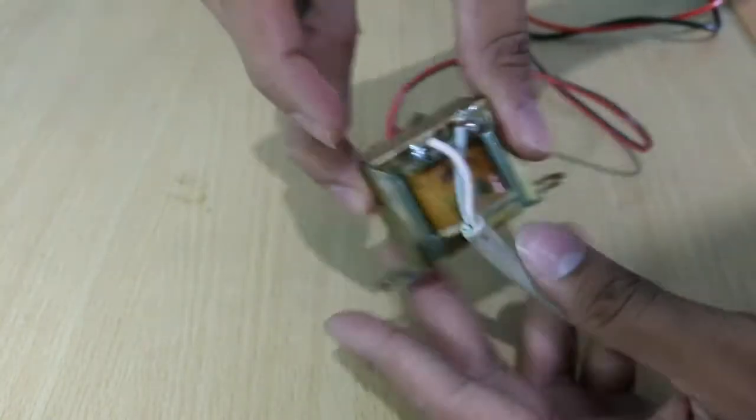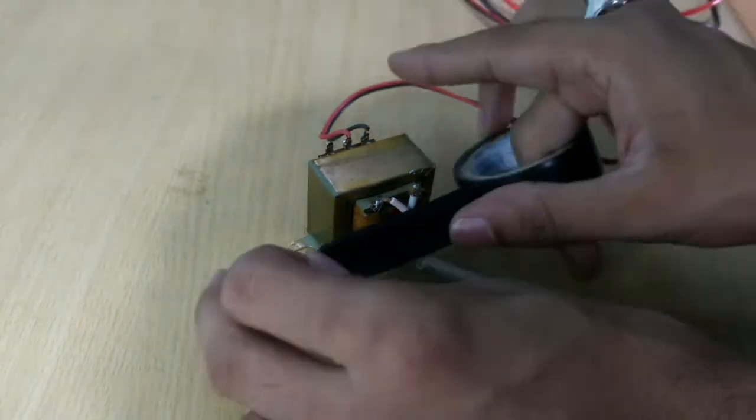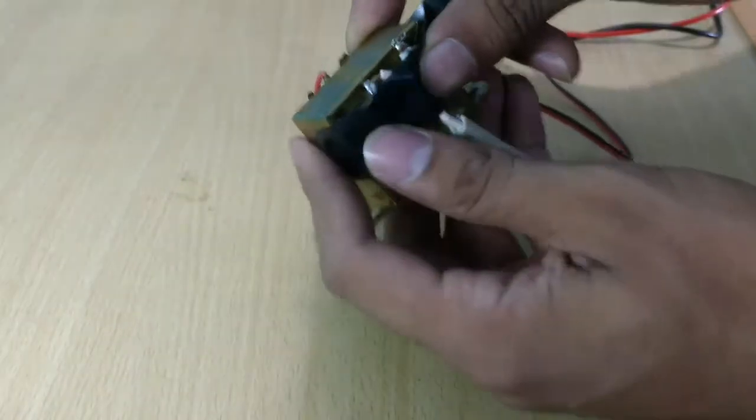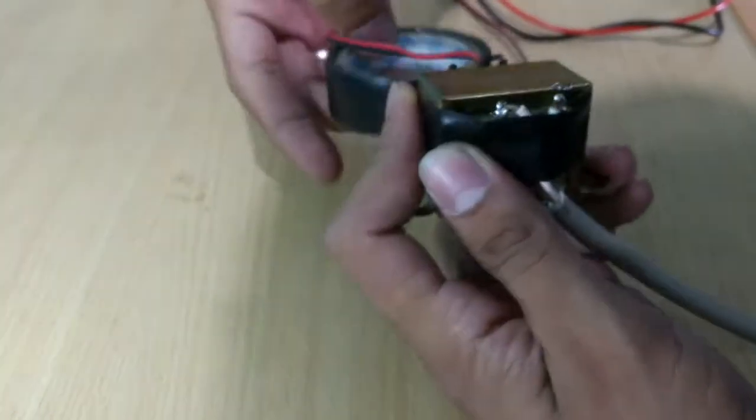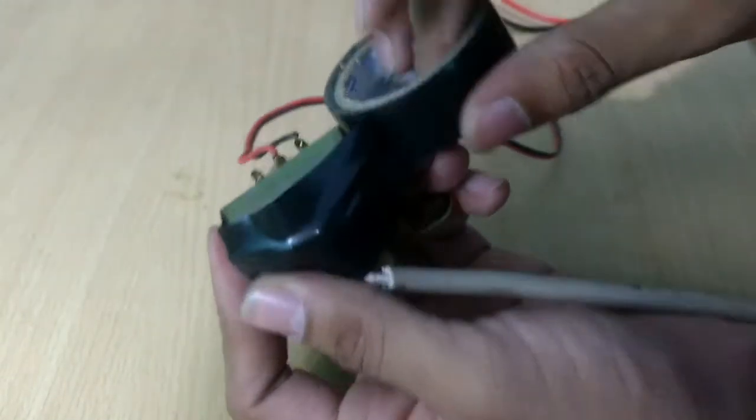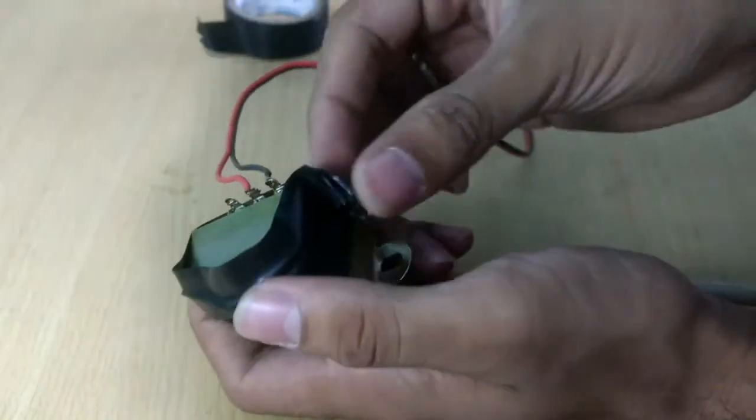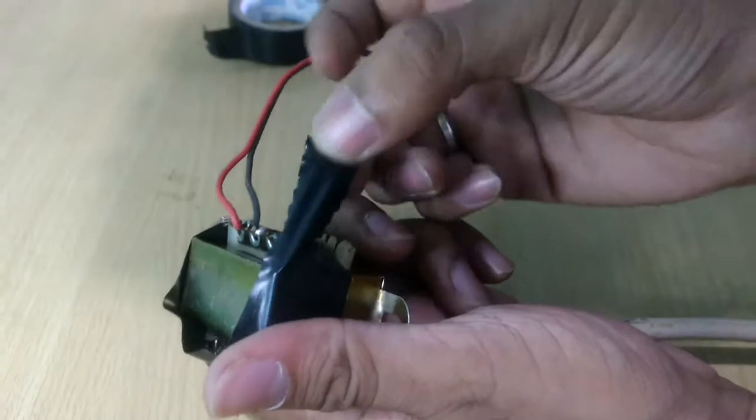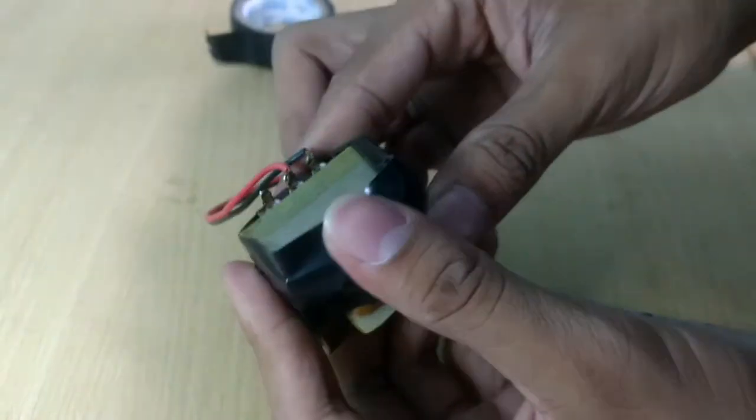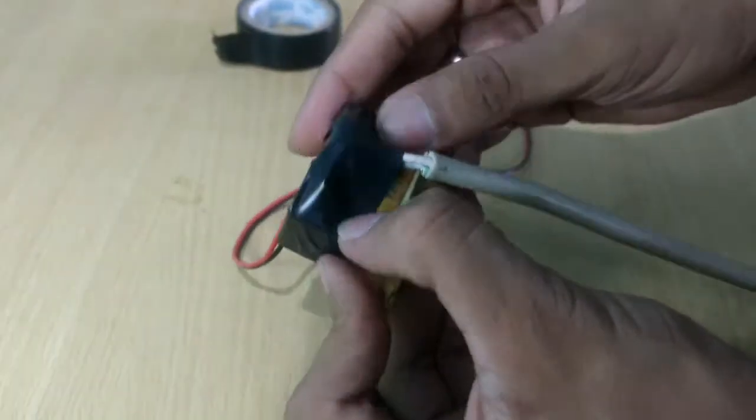One thing we must keep in mind is that we are dealing with 230 volts AC. A contact with such kind of voltage with our body can lead to death and it's very risky. So we cover the pins or insulate the pins using black tape so that we cannot even by mistake touch the pins. Yeah, so it looks good now and we are ready to go.